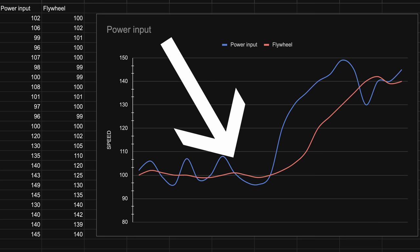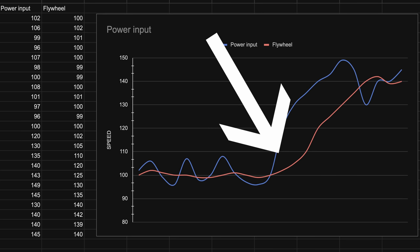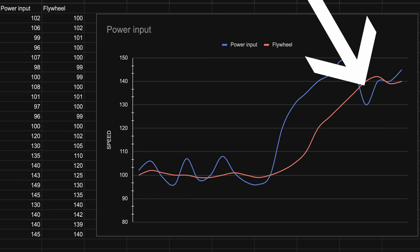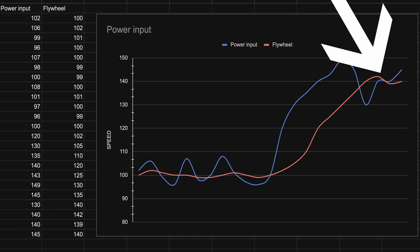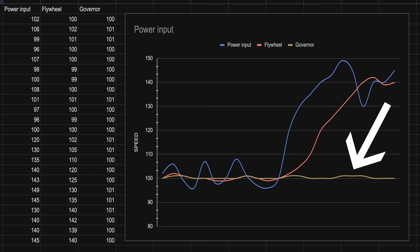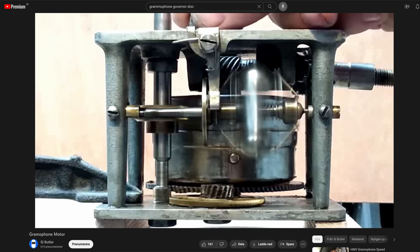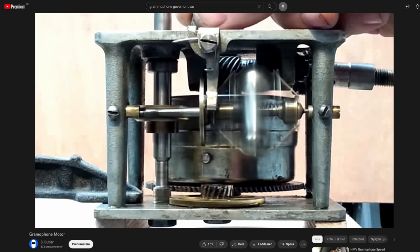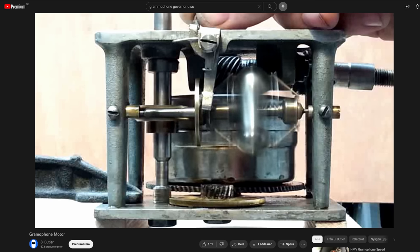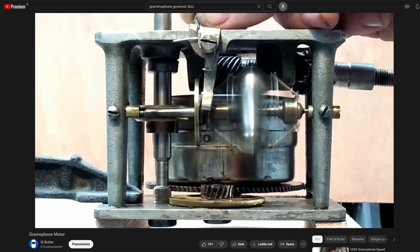So if I start to accelerate like you can see the blue line is doing here in the middle and I go up to 130, 140, the flywheel will accelerate with me, only with a bit of latency. A governor on the other hand can add friction to the system while the speed reaches a certain value. So in theory a governor can be added to cap the top speed of a system, like we can see used in this gramophone here.